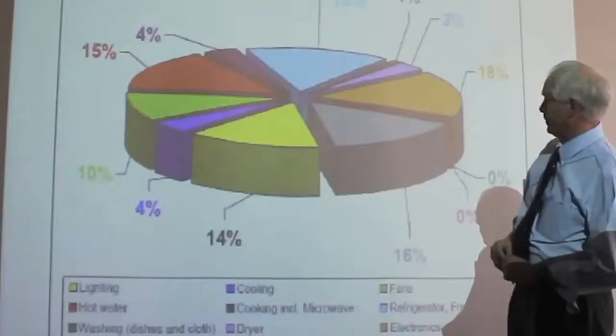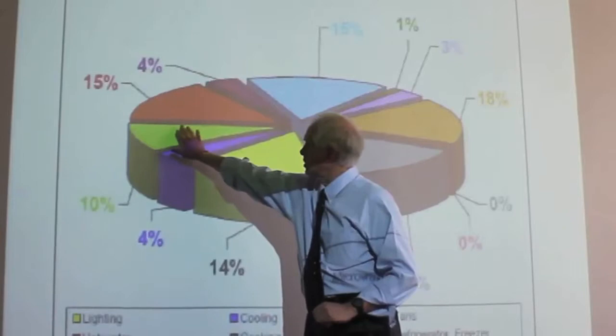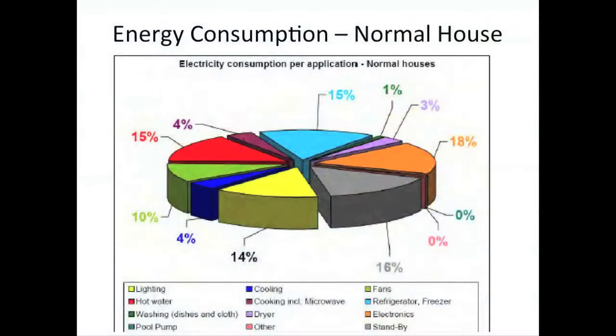Lighting, about 15%, 14%. This is washing dishes and clothes. This is hot water for showers, and this is cooling load. Those four things, that's about half, more than half of the energy used.